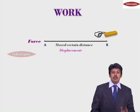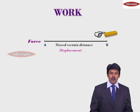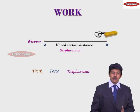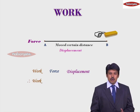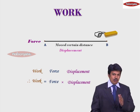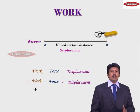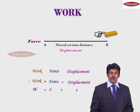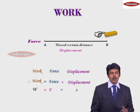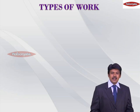This distance covered by the duster is called displacement. So whenever we define the term work, we require two quantities: one is force, and the other is displacement. The relation is: work equals force into displacement. Work is represented by the symbol W, force by F, and displacement by S. So the formula becomes W = F × S — a very simple formula for work.